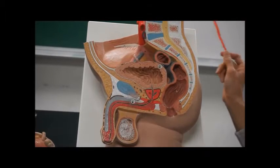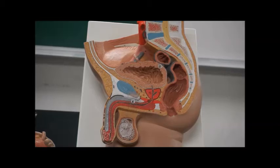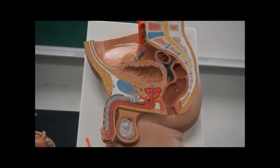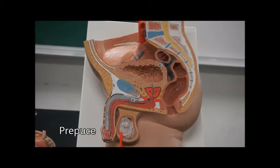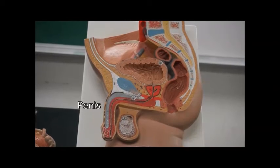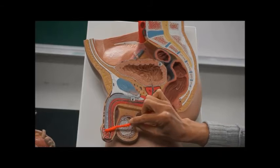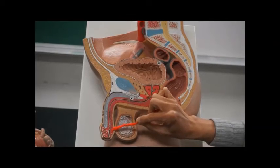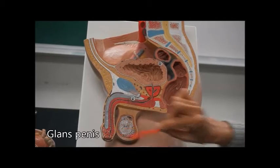I'm going to do a sagittal section of the body. You see these internal structures. Again, this is the prepuce. All of this is part of the penis too. This part, the swollen part of the head of the penis, that's referred to as the glans penis.